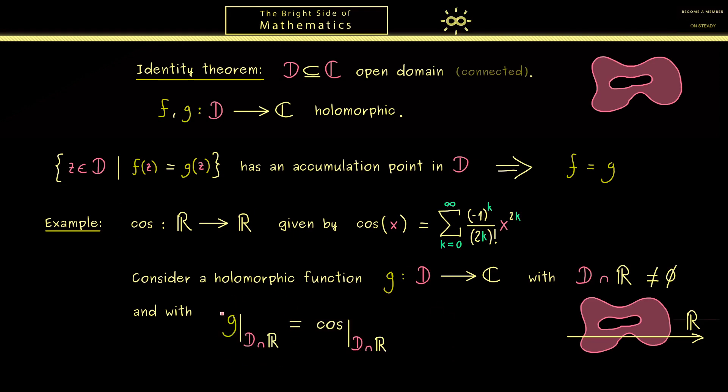This means that the function g restricted to this intersection should coincide with the cosine function. We could write the restriction like this. This equality means that g and cosine coincide on this set. Since D is an open set, this intersection has accumulation points in D as well. In other words, the premise is obviously fulfilled.